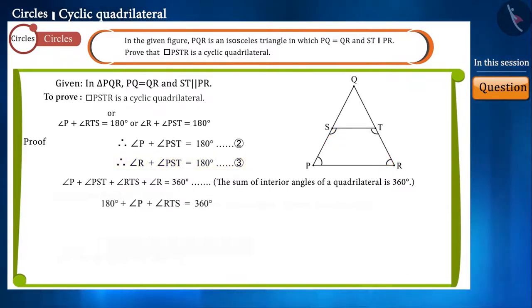the sum of angle P and angle RTS will also be 180 degrees. Friends, now observe equations 3 and 4. On the basis of these we can say that the opposite angles in quadrilateral PSTR are supplementary.